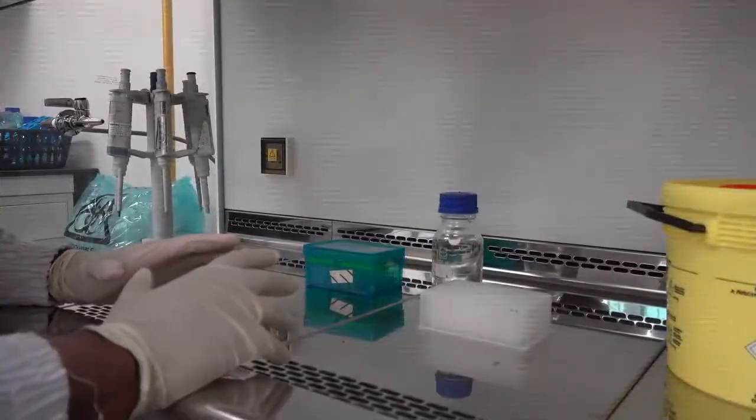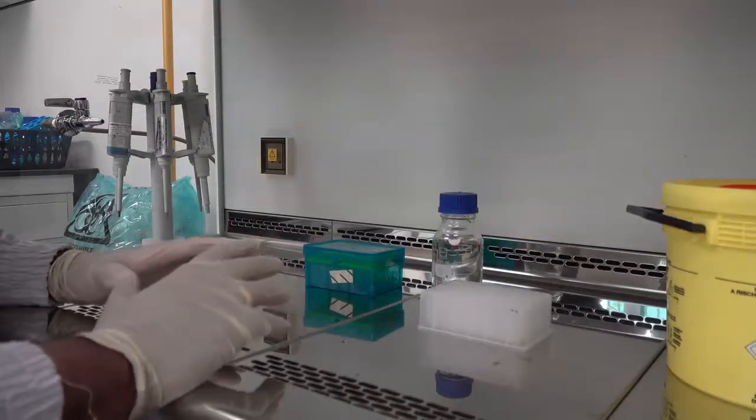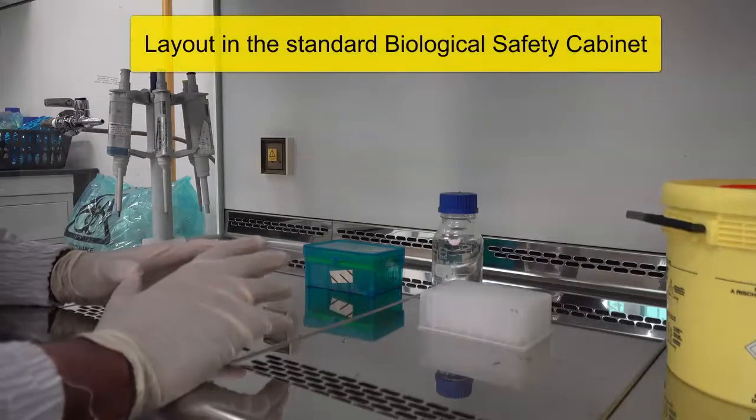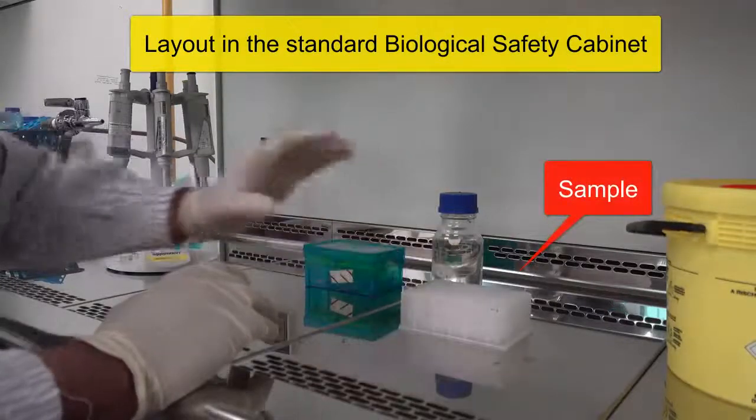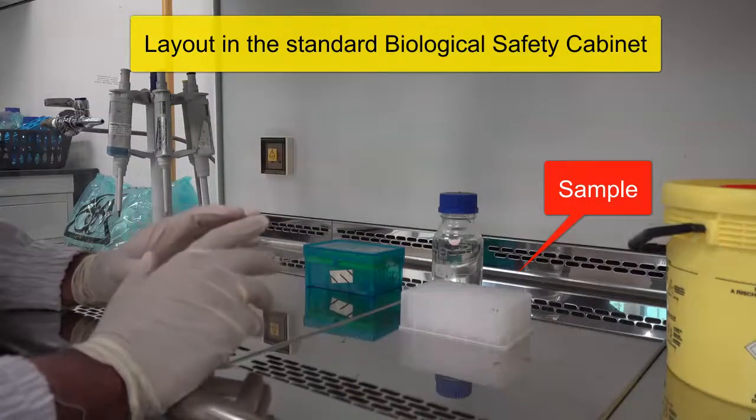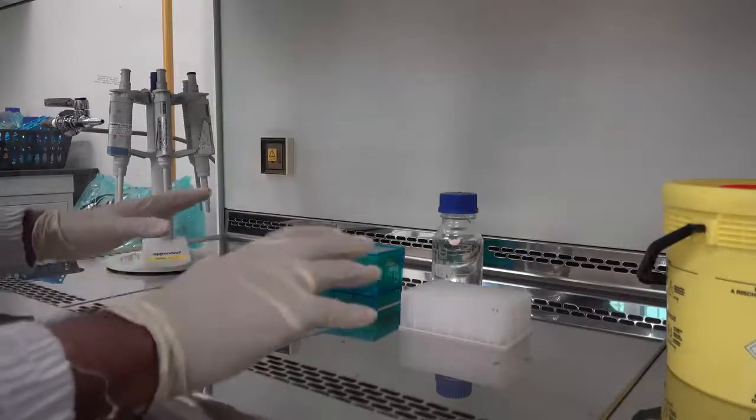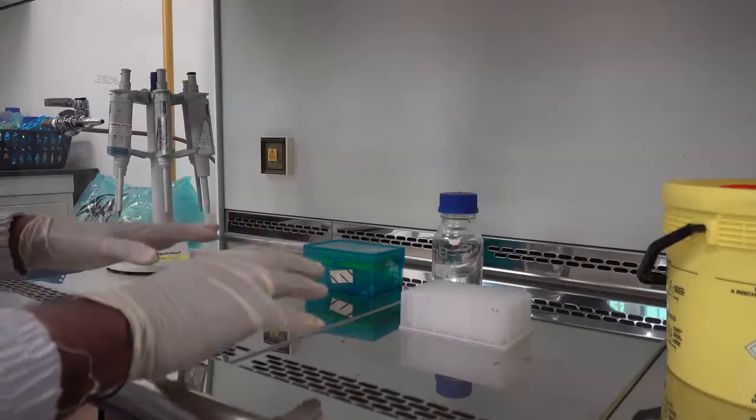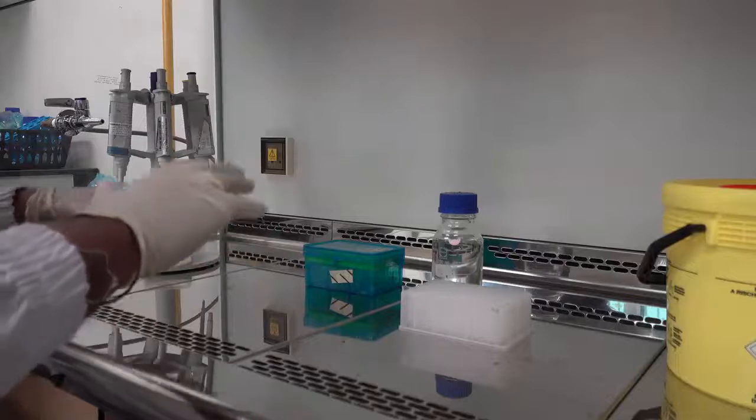In this video I will be describing to you the layout of the standard biological safety cabinet. This cabinet is designed to protect both the sample as well as the operator from exposure to the biological agent. As you can see all your equipment within this biological safety cabinet has to be laid out so as to ensure a smooth working environment.